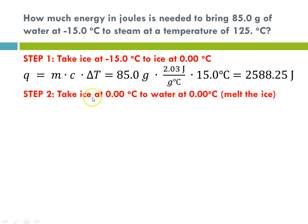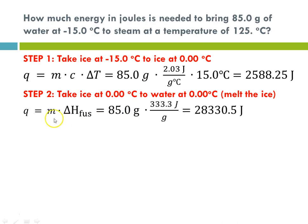Step 2: now that we're at zero, we take ice at zero to water at zero — we're melting it. There's no delta T because we're at the phase change. Q equals mass times delta H of fusion: 85 grams times 333.3 joules per gram, which comes out to 28,330.5 joules.